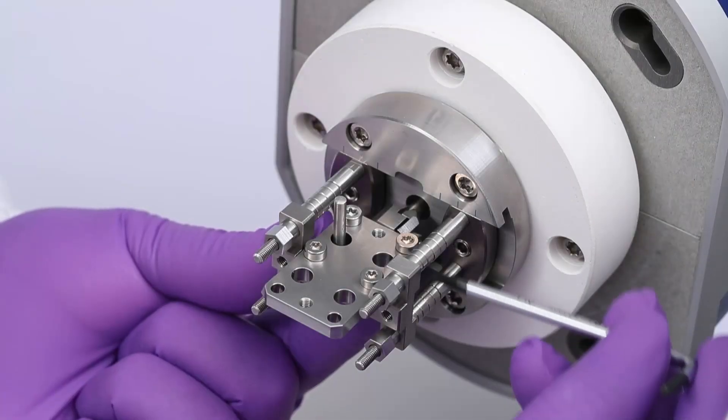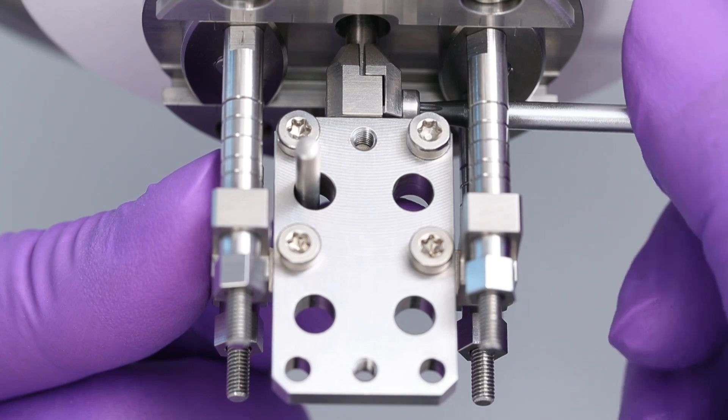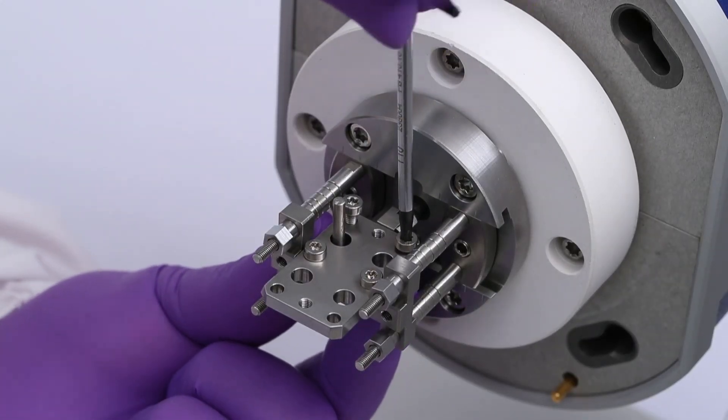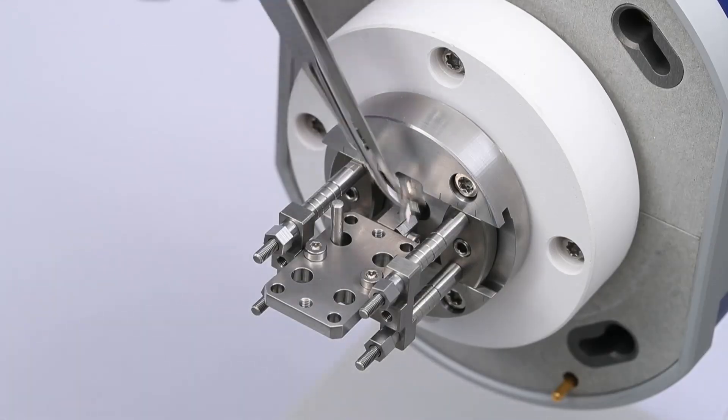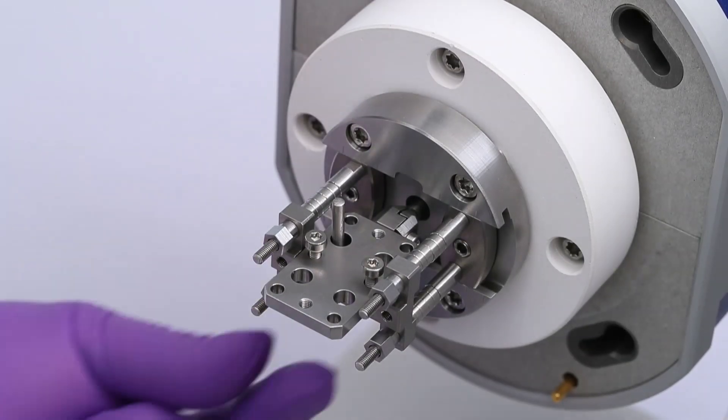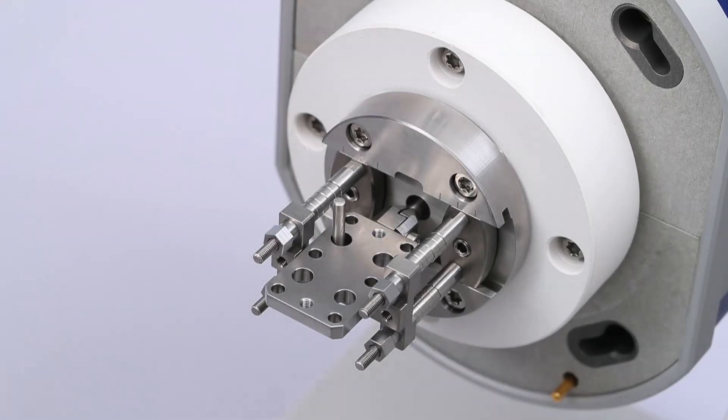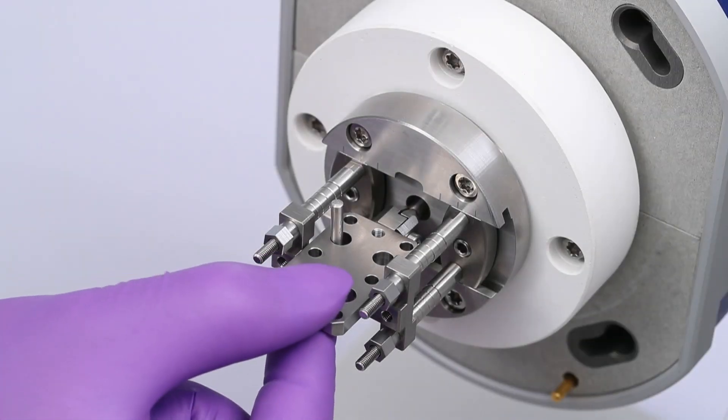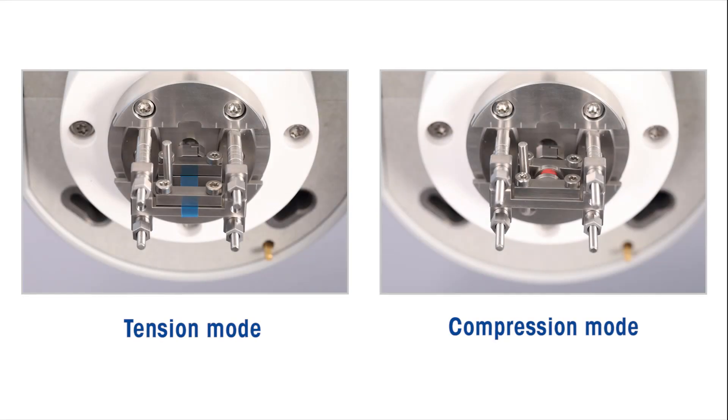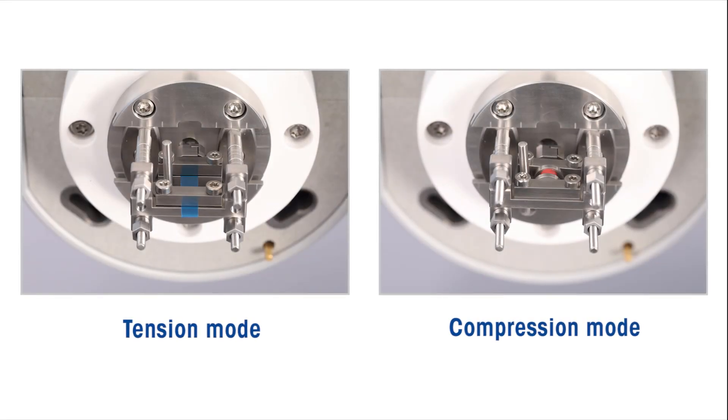Secure the drive shaft part of the tension clamp by fastening the securing screw. Take out the two torque screws on the drive shaft side of the alignment insert before removing the remaining two torque screws. Detach the alignment insert. The tension or compression drive shaft clamp is now installed.